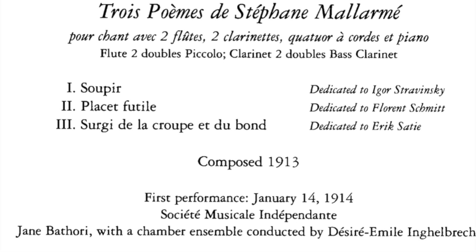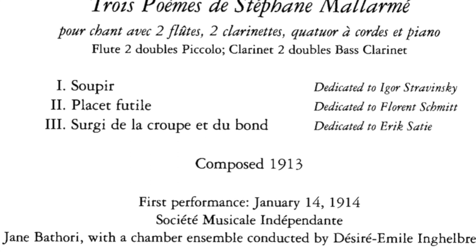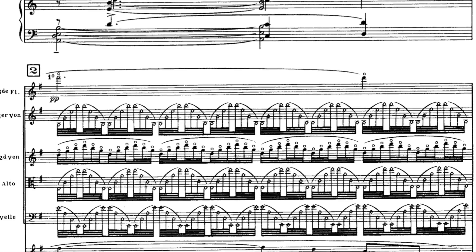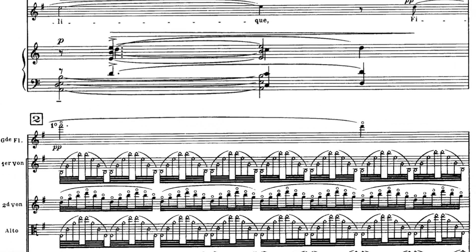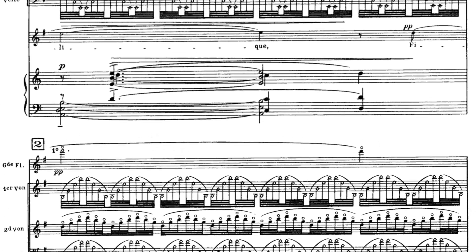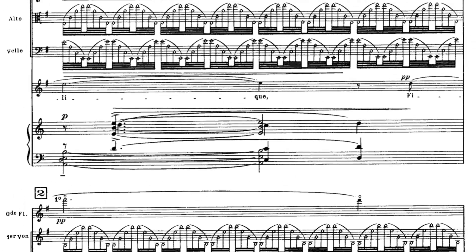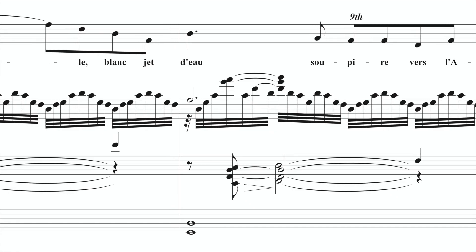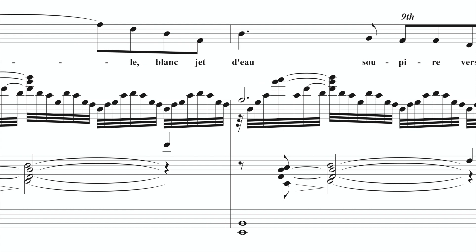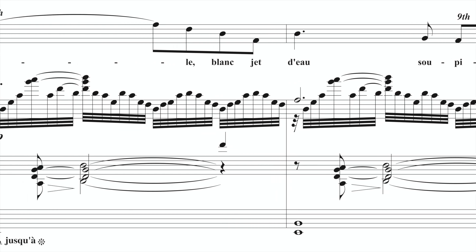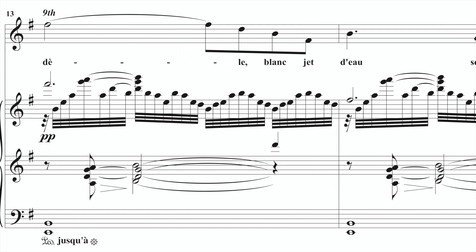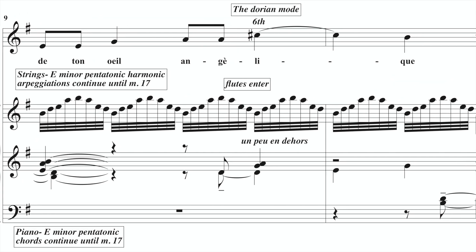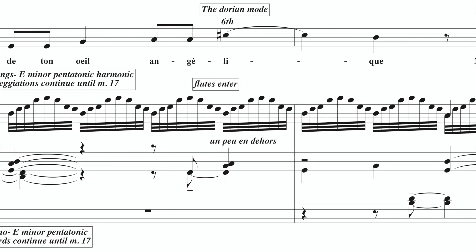I made a video a while back of the first movement of Ravel's Poèmes de Mallarmé. In that video I showed how the opening utilized a beautiful textural idea in the ensemble: there's an E minor pentatonic wash with lots of harmonics in the strings and clustery chords using the pentatonic scale on the piano. The singer sometimes leaves E minor pentatonic and sings F# and C#, giving a beautiful E Dorian feel.